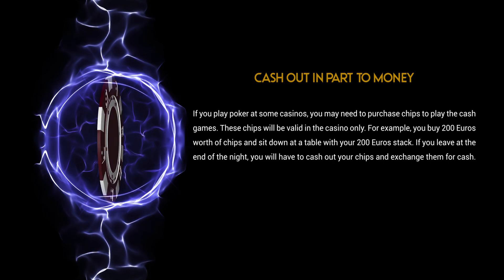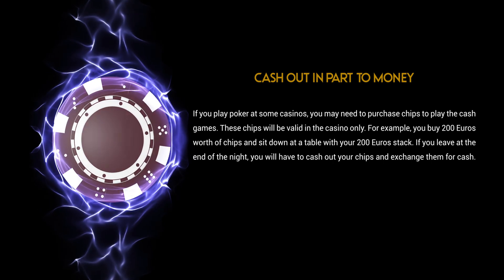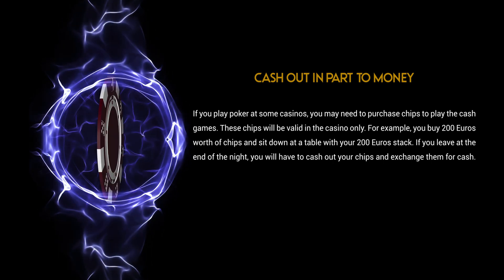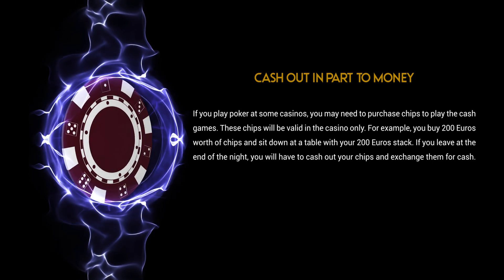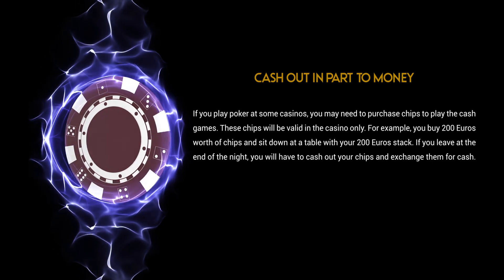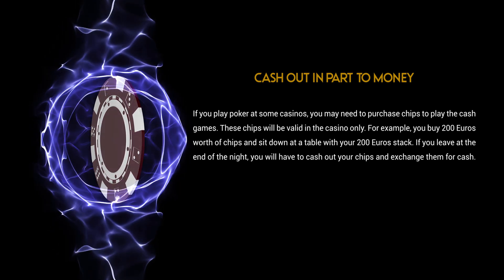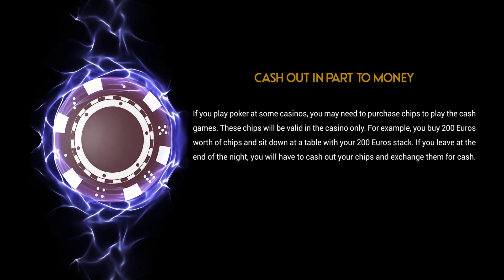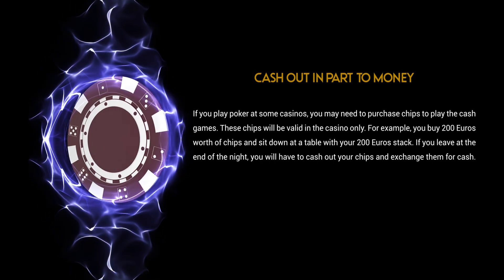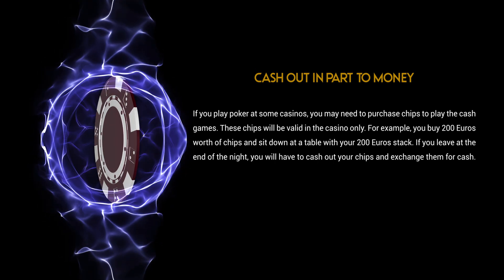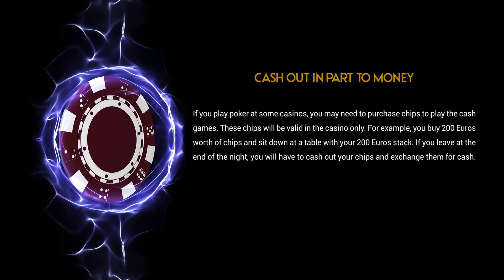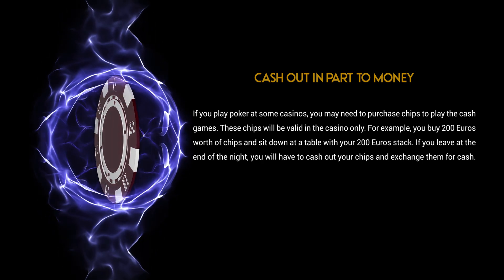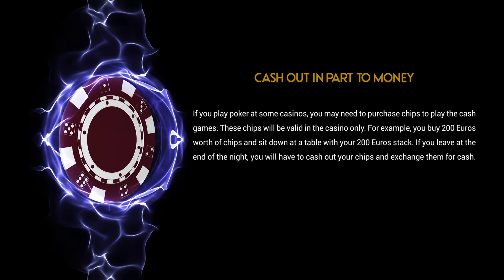Cash out in part to money. If you play poker at some casinos, you may need to purchase chips to play the cash games. These chips will be valid in the casino only. For example, you buy 200 euros worth of chips and sit down at a table with your 200 euros stack. If you leave at the end of the night, you will have to cash out your chips and exchange them for cash.